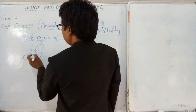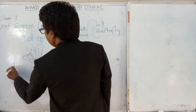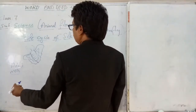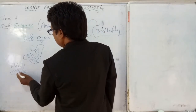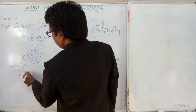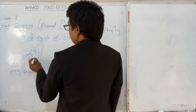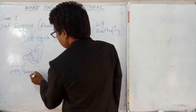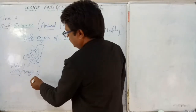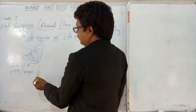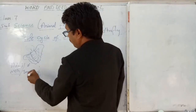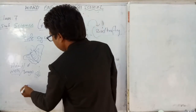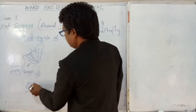Now let me draw the diagram. This is an adult moth — we can also call it imago. The adult moth lays eggs, around 500 eggs in one go. After laying around 500 eggs, it dies.